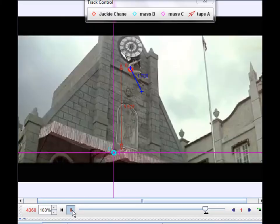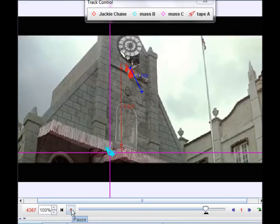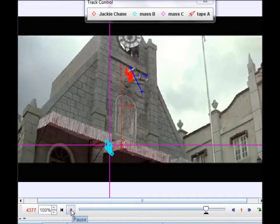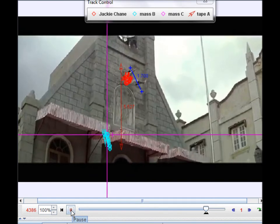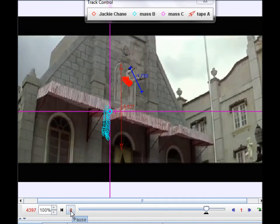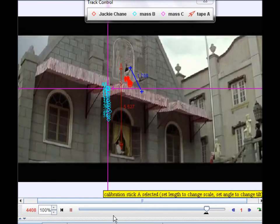To start the procedure, I explored the clip of the clocktower stunt in Tracker and tracked the motion of three different objects: Jackie Chan, the first awning, and the second awning. In order to account for the panning motion of the camera, I split the video into two tracking sessions.